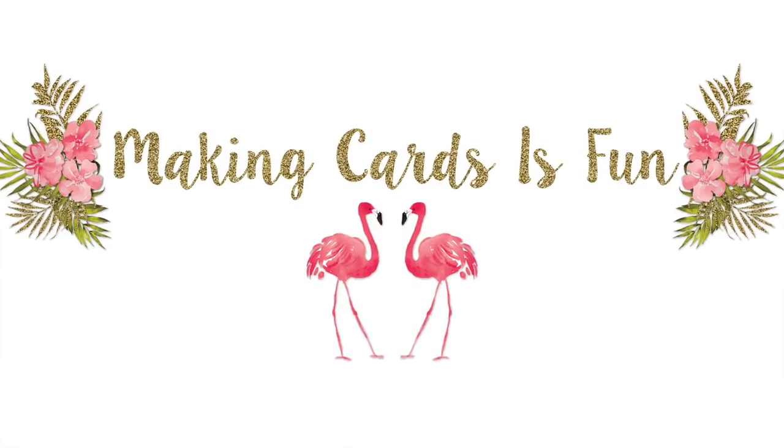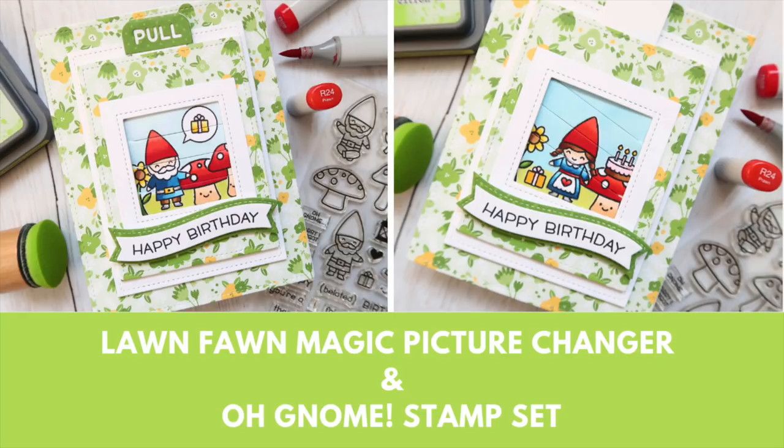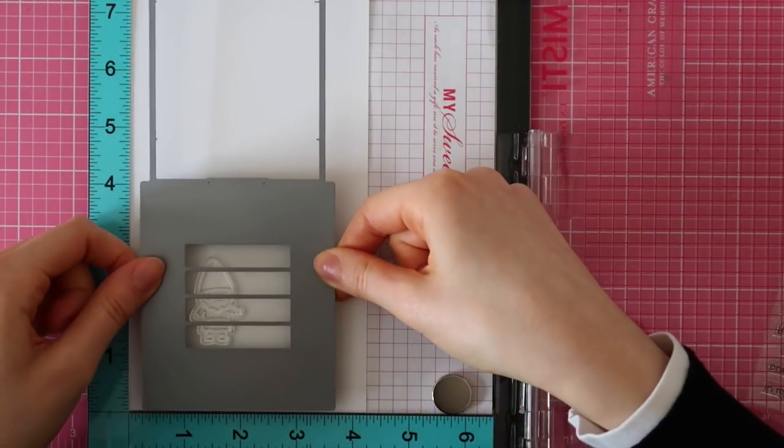Hey everyone, it's Laura here from MakingCards is Fun.com and welcome to another card making video tutorial. In today's video, I'll be showing you how to make an adorable card featuring the Magic Picture Changer die cut set from Lawn Fawn, along with their Oh Gnome stamp set. Let's get started.